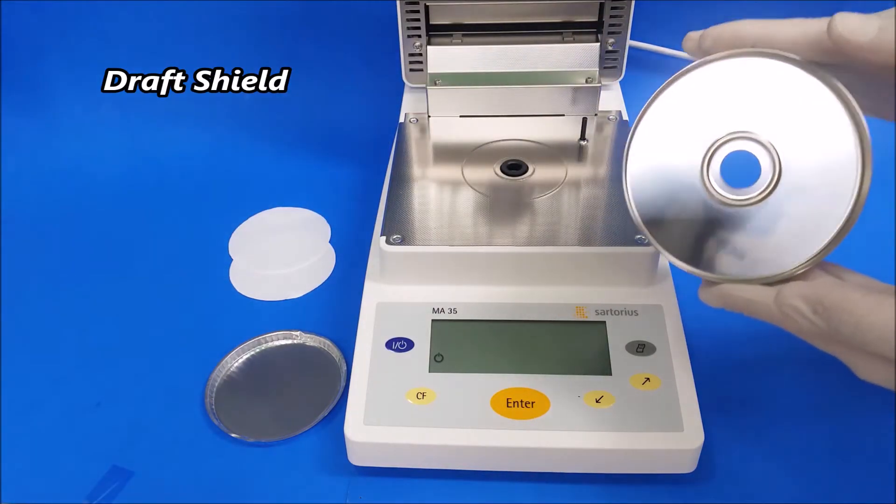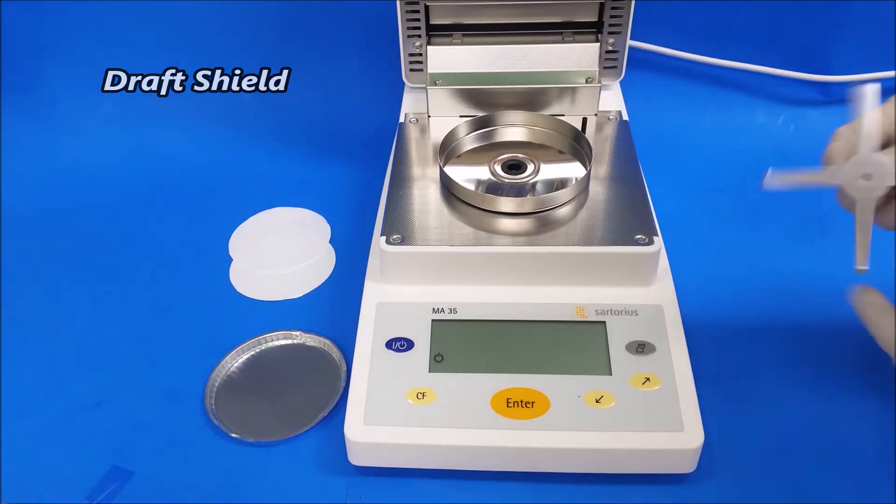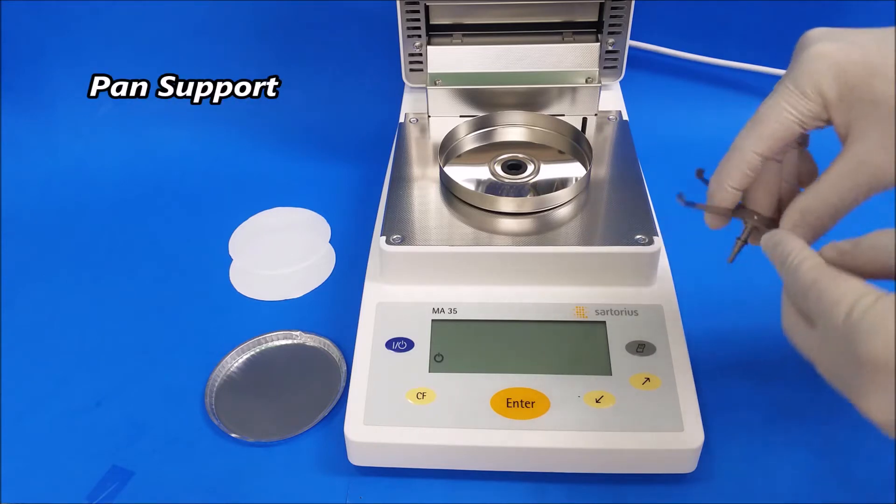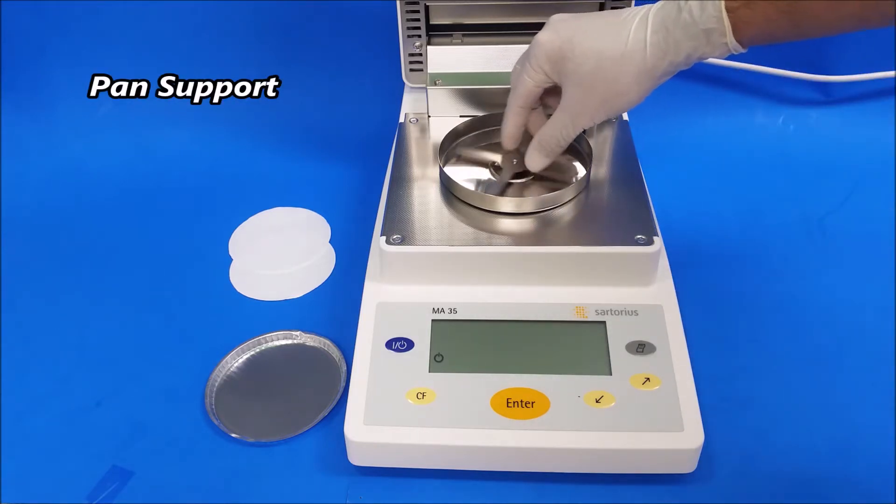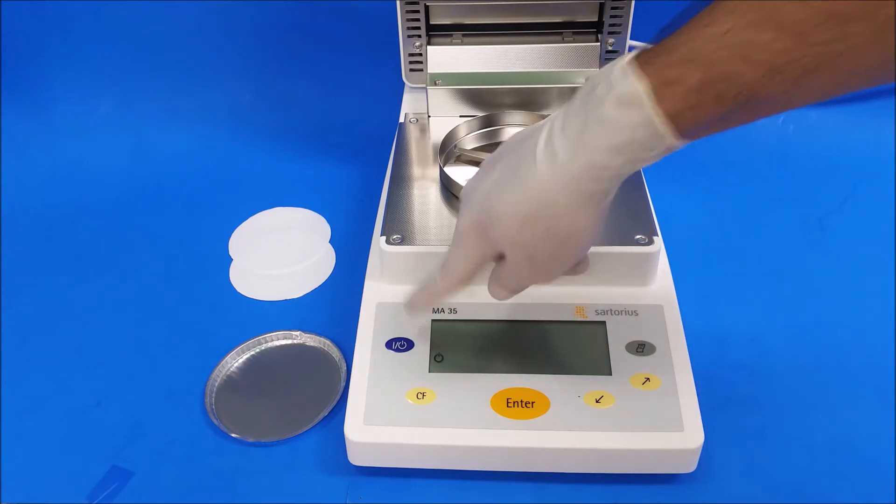Next will be the pan support. Now we're going to turn on the unit once you have it plugged in the back. I'm going to change the test parameters because I need to run a standard solution test.